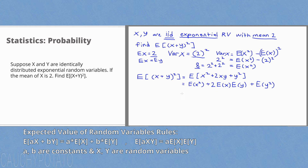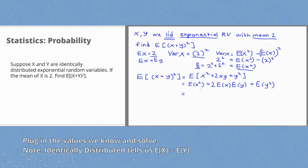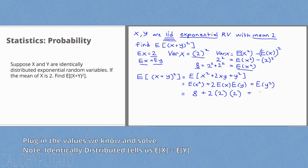Plugging in the values we know: x and y are iid, so the expected value of x equals the expected value of y, which is 2. The expected value of y squared is 8. Since both x and y are iid, the expected value of x squared equals the expected value of y squared. Adding this all together, we get 24. So the expected value of x plus y squared is equal to 24.